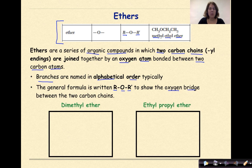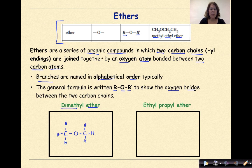Let's look at two examples. The first one is dimethyl ether. That means we're going to have two methyl branches connected together by an oxygen: carbon–oxygen–carbon, with hydrogens around both carbons. The condensed structural formula is CH₃OCH₃, dimethyl ether.